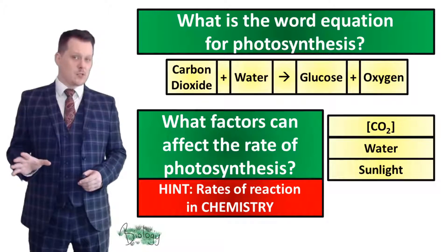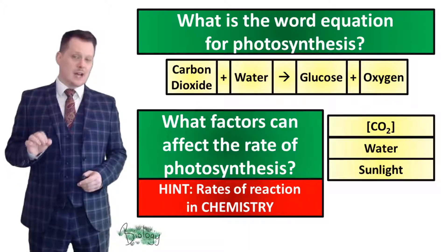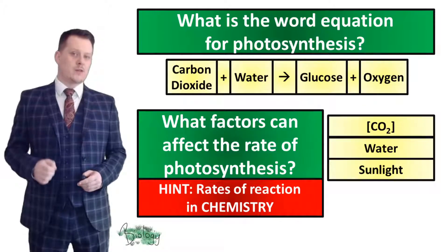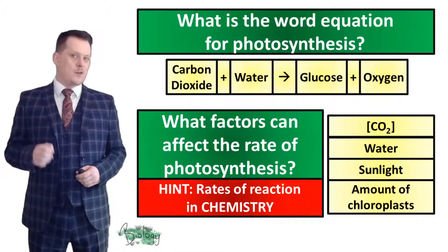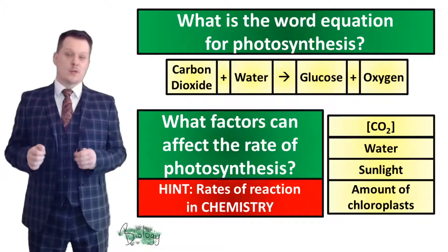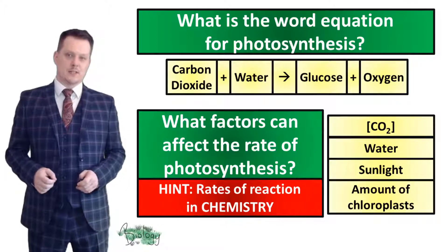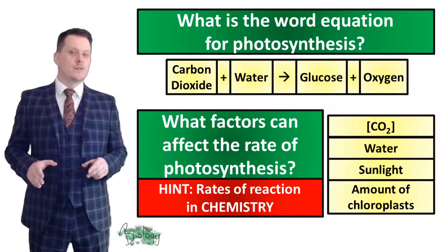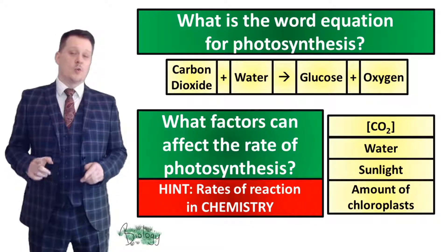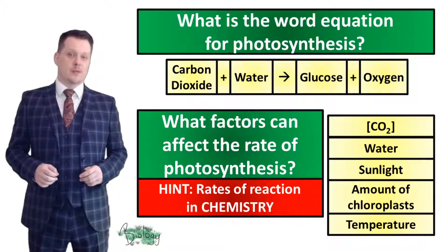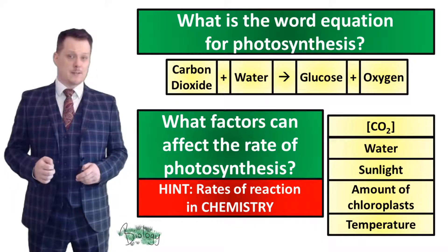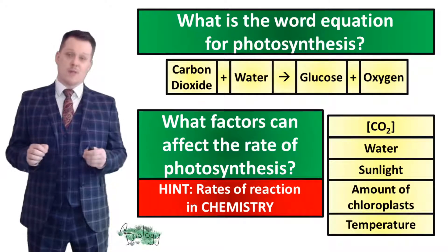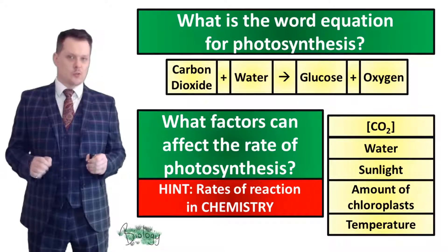If you think back to the red tree in our starter, it is likely that tree will have a lower rate of photosynthesis because it has a lower number of chloroplasts. Increasing the number of chloroplasts increases the rate of photosynthesis. We also said this reaction is governed by enzymes, which means temperature affects the rate too. There will be an optimum temperature — if it gets too cold or too hot, the rate of photosynthesis will slow down.